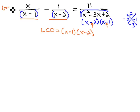We will multiply each term, then, by x minus 1, x minus 2, which will allow us to reduce out all of the denominators.